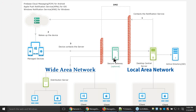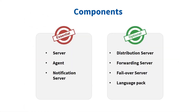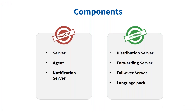Here are the key components we've discussed: server, agent, and distribution server. The notification server is another important component, playing a key role in on-demand tasks like remote control or scans. The failover service is also an important feature — it brings in an additional server that actively monitors the primary server and takes over when the primary fails, helping eliminate downtime in your business.